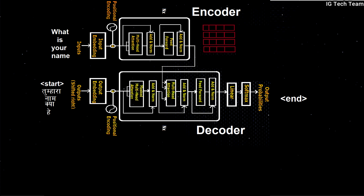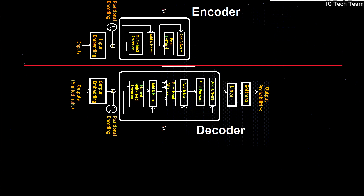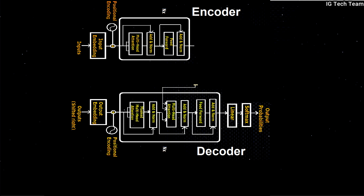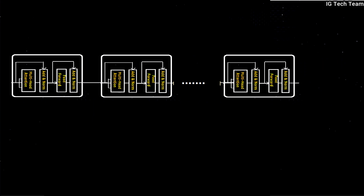Now, what is BERT? If we separate the encoder and decoder, BERT is nothing but the encoder of Transformer. We don't need the decoder in BERT. The goal of BERT is to generate a language model, so only the encoder mechanism is necessary. We stack Transformer encoders together and then we get BERT.